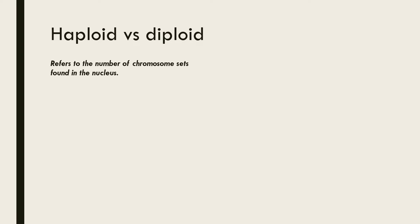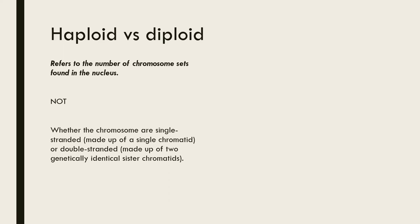When we use the terms haploid and diploid we are referring to the number of chromosome sets found in the nucleus. It has nothing to do with whether those chromosomes are single-stranded and made up of a single chromatid or double-stranded and made up of two genetically identical sister chromatids.